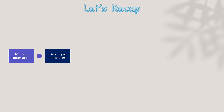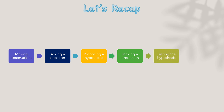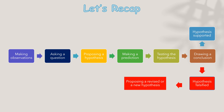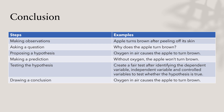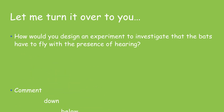Let's recap. The six important steps in conducting experiments are: making observations, asking a question, proposing a hypothesis, making a prediction, testing the hypothesis, and drawing a conclusion. If the conclusion supports the hypothesis, congratulations. But if it does not, we consider the hypothesis to be falsified, and we have to propose a revised or new hypothesis. How would you design an experiment to investigate that bats have to fly with the presence of hearing? Comment down below.